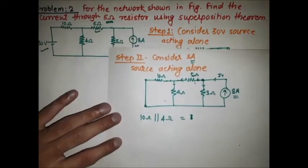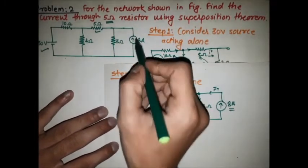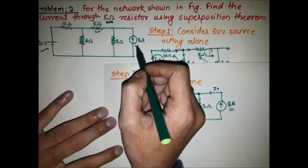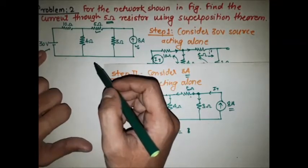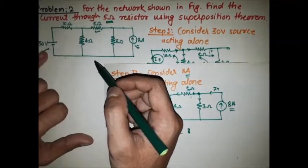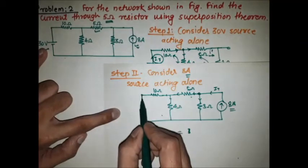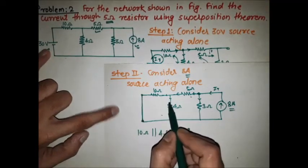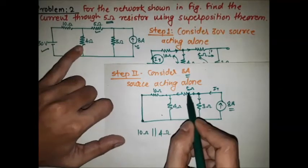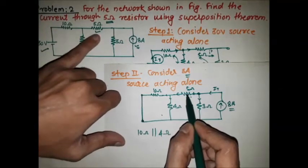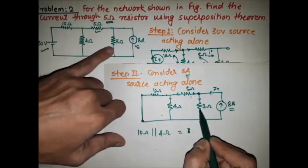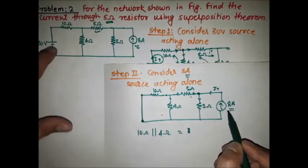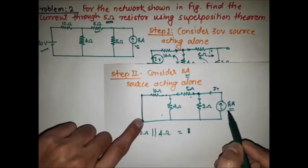Now considering the 8 ampere source acting alone. The 30V voltage source is replaced by a short circuit. The circuit now has the 10 ohm resistor, 4 ohm resistor, 5 ohm resistor, and 3 ohm resistor as before, with the 8 ampere current source and the voltage source replaced by a short circuit.